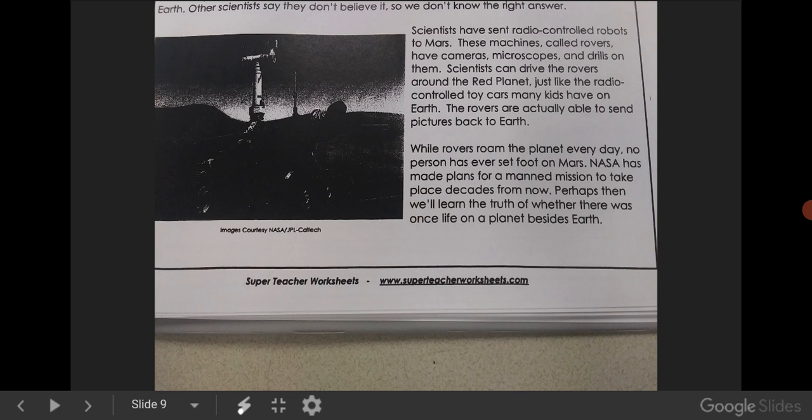Scientists have sent radio-controlled robots to Mars. These machines, called rovers, have cameras, microscopes, and drills on them. Scientists can drive the rovers around the red planet, just like the radio-controlled toy cars many kids have on Earth. The rovers are actually able to send pictures back to Earth.